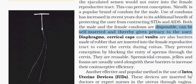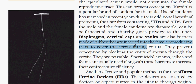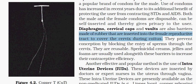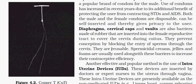Diaphragms, cervical caps, and vaults are also made of rubber but are inserted into the female reproductive tract during coitus to block the entry of sperms. Along with these barriers, spermicidal creams, jellies, and foams are also used to increase contraceptive efficiency.